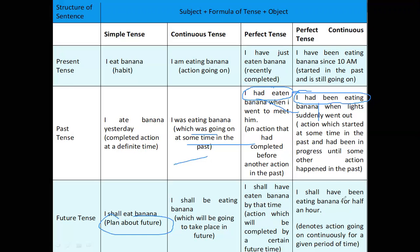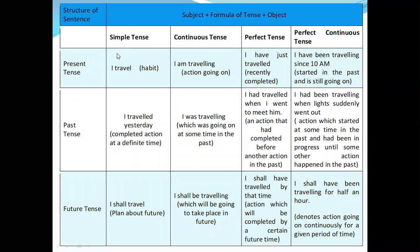Another simple example. Simple present tense: 'I travel' — that is my habit. Present continuous tense: 'I am traveling' — the action of traveling is going on now. Present perfect tense: 'I have just traveled recently' — I have completed traveling. Present perfect continuous tense: 'I have been traveling since 10 a.m.' or 'I have been traveling for the last one hour.'